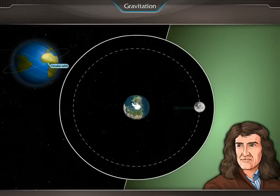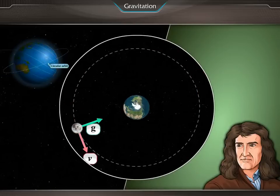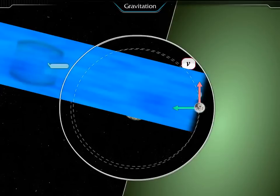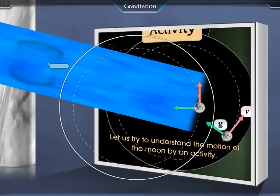The moon falls towards the earth under the action of gravitational force, but due to its horizontal velocity, it moves in a circular orbit.